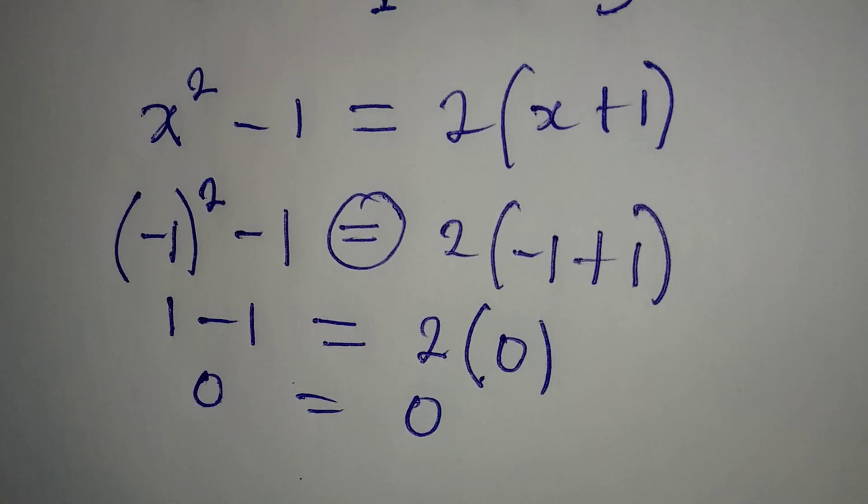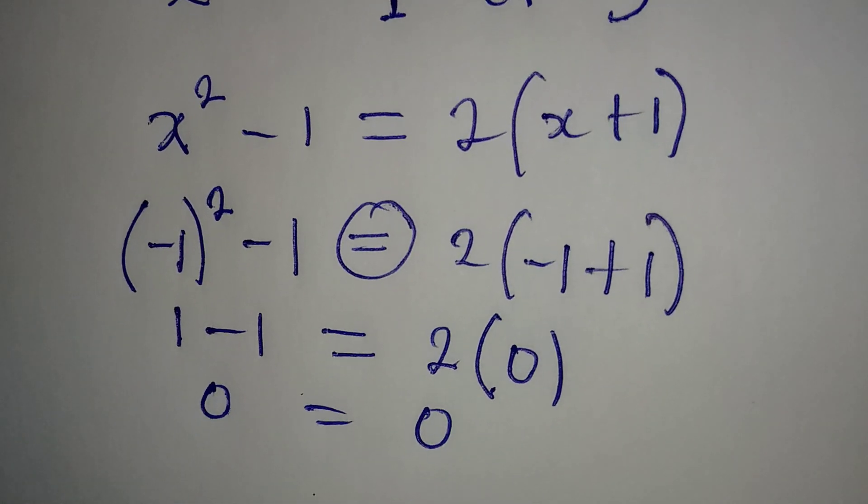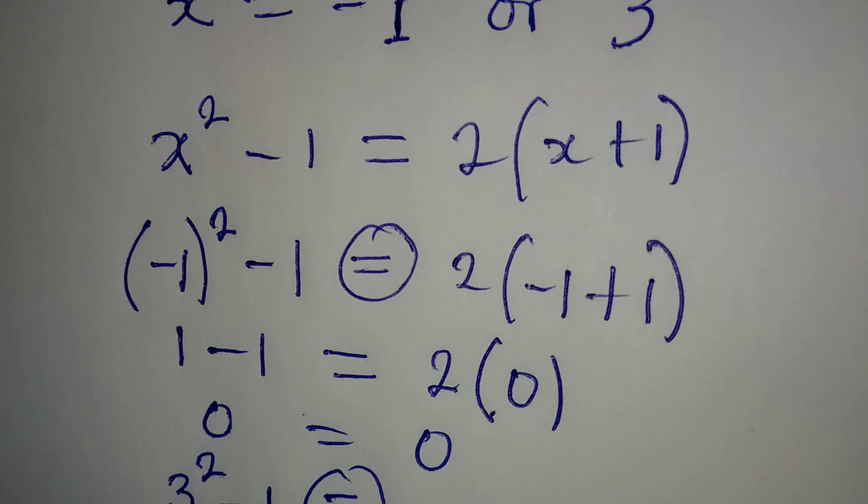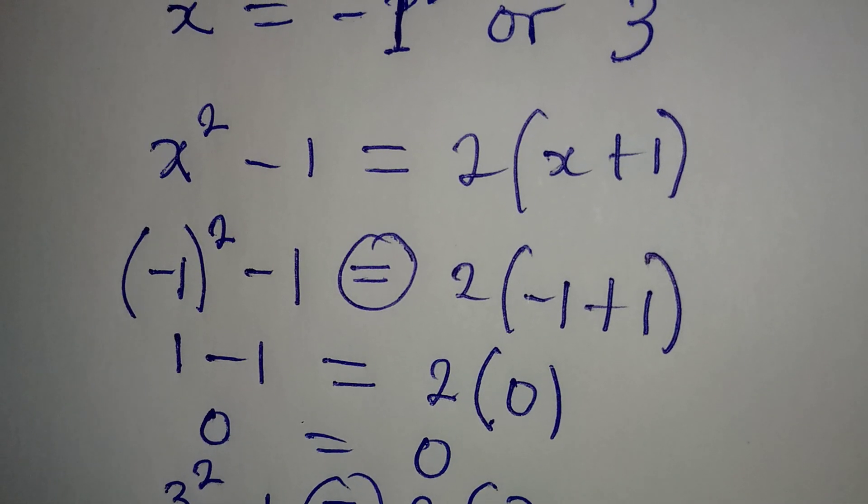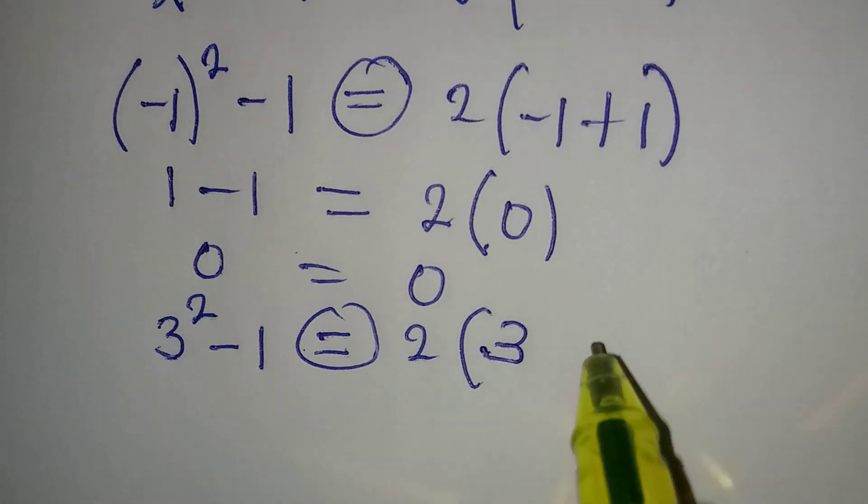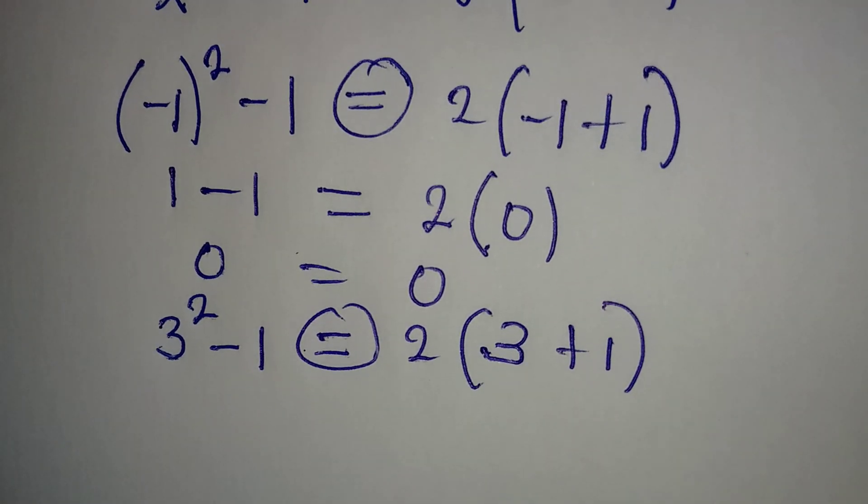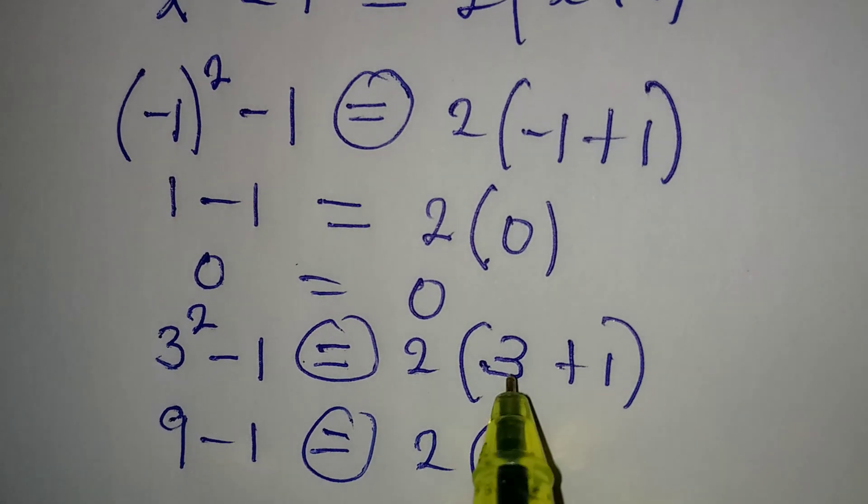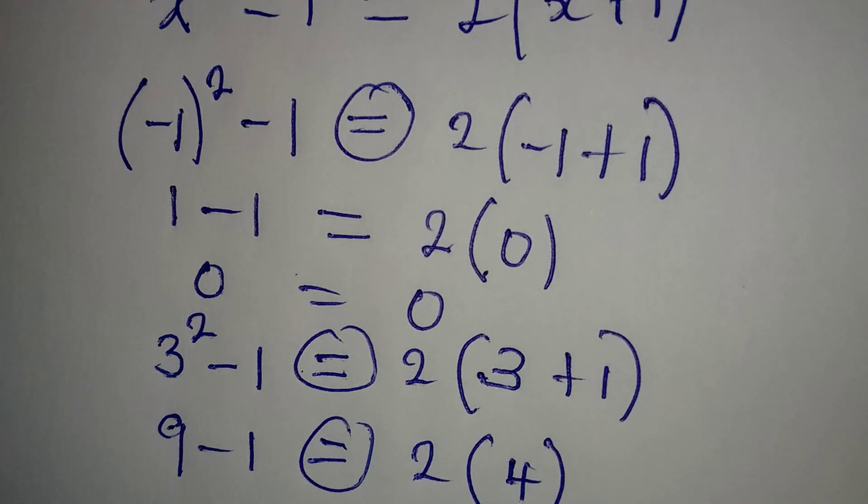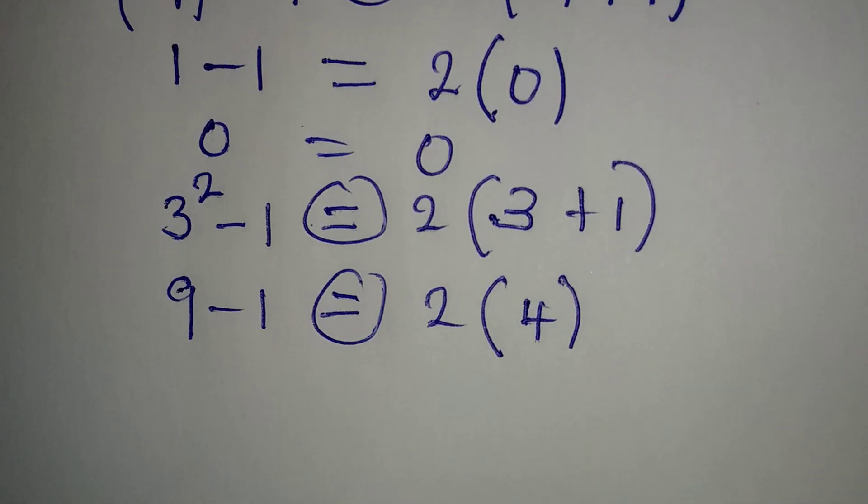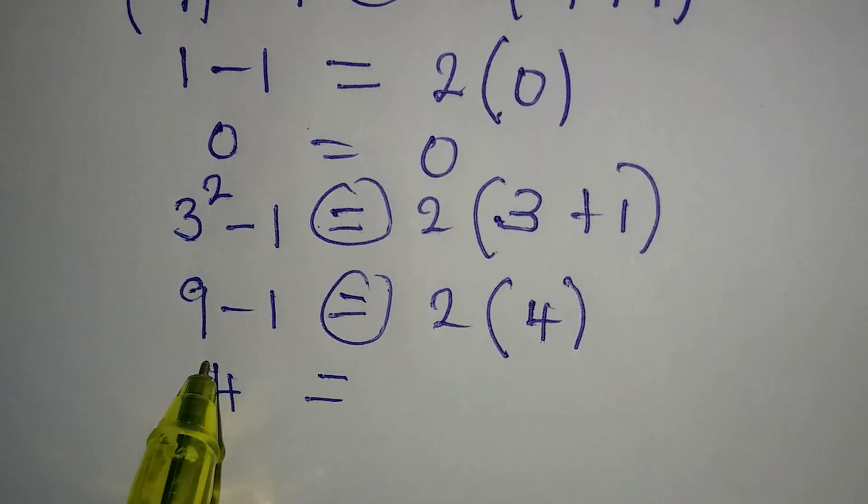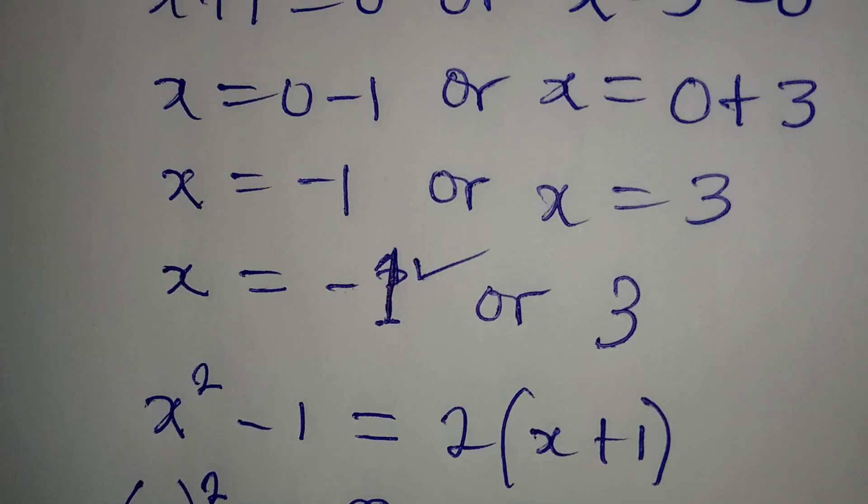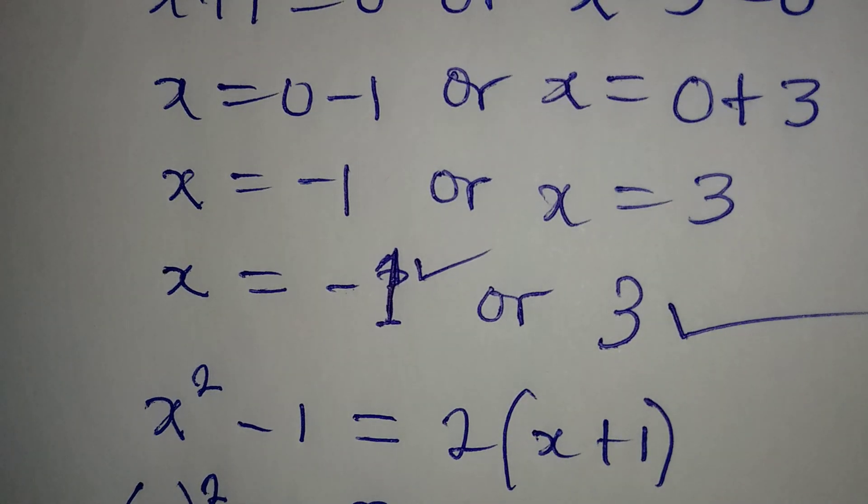Now let us try the second value of x, which is 3. So in place of x squared I will be writing 3 squared minus 1. Will this be equal to 2 into 3 plus 1? This is 9 minus 1. Will this be equal to 2 into bracket 3 plus 1 is 4? I think by now you should be able to see that they are both equal. This minus this is 8, and 2 times 4 will give 8. So this confirms that the second value of x, which is 3, is also satisfying.